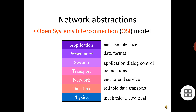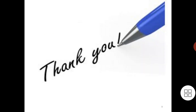The sixth layer is the presentation layer, which defines data exchange formats and provides transformation utilities to application programs. The seventh and final layer is the application layer, which provides the application interface between the network and end users. These are the seven layers of the Open System Interconnection (OSI) model.